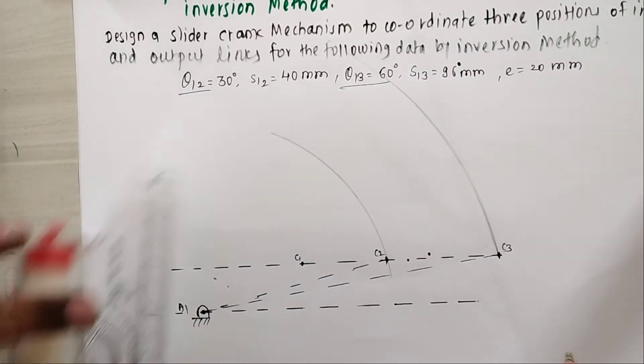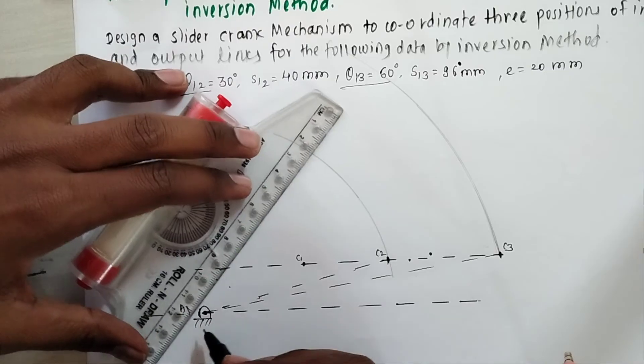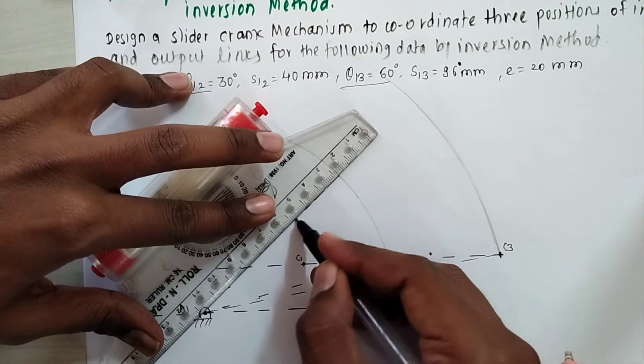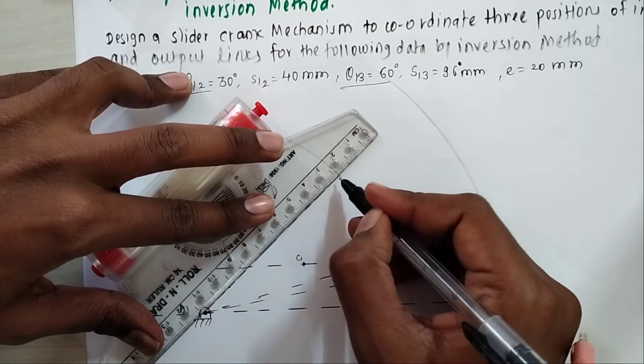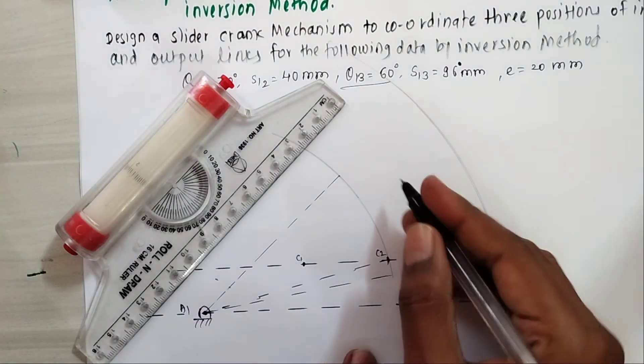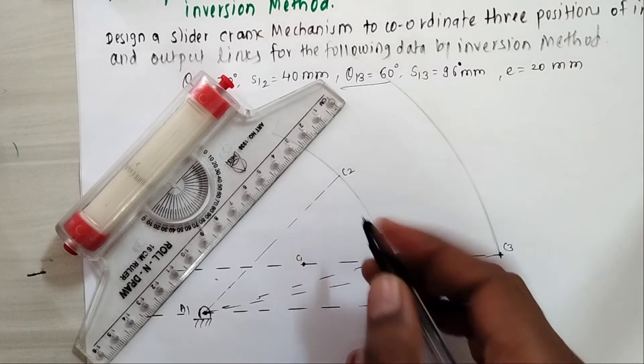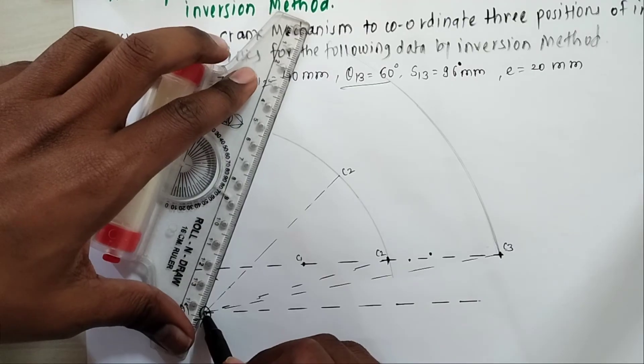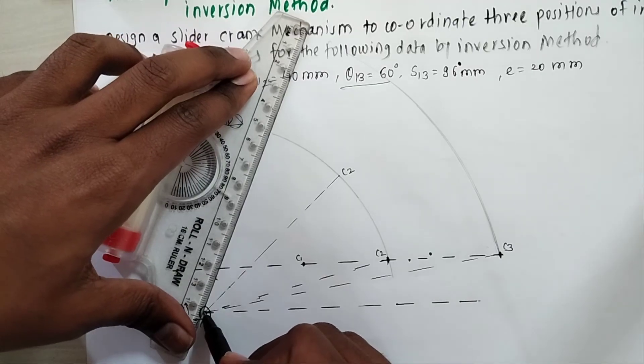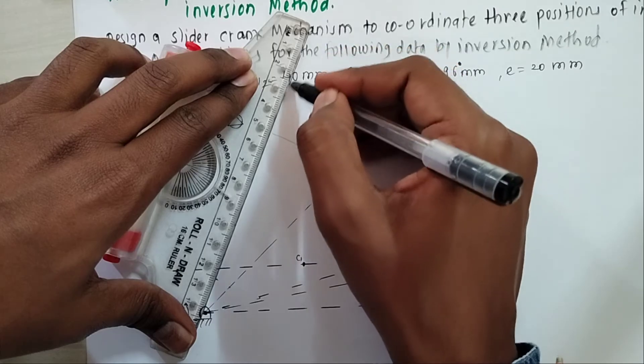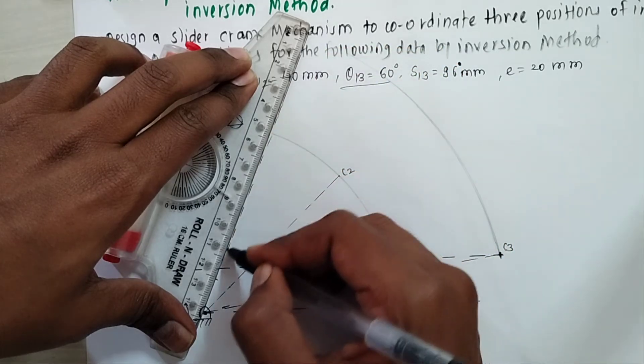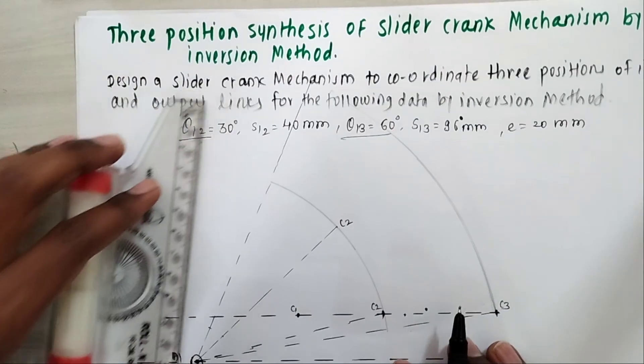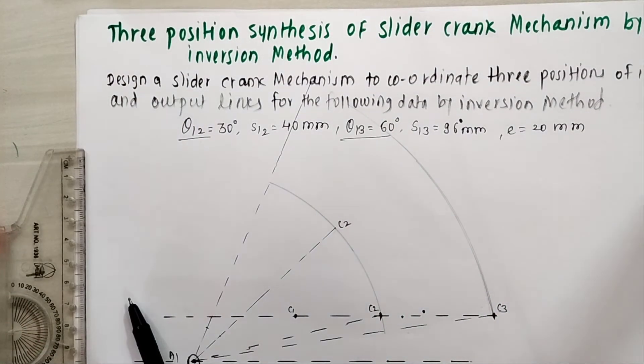As angles are already marked here from A1C2, this angle is 30 degree. Whenever this angle cuts this arc, that is your C2 dash. And whenever this line cuts this arc here, we get C3 dash on this arc.